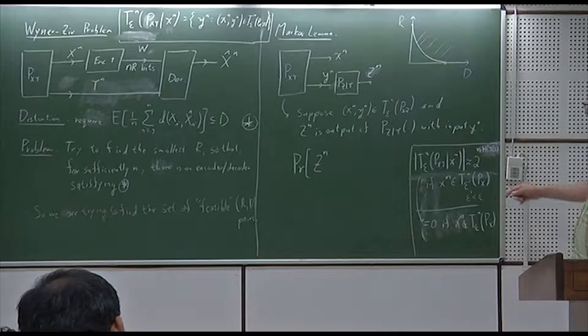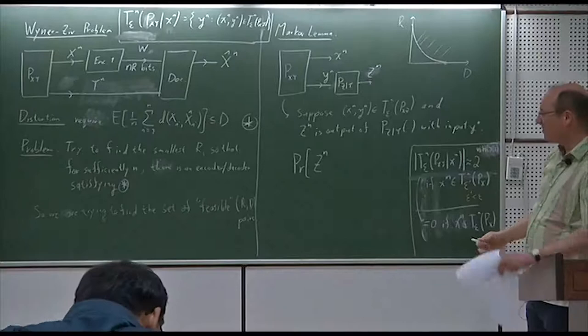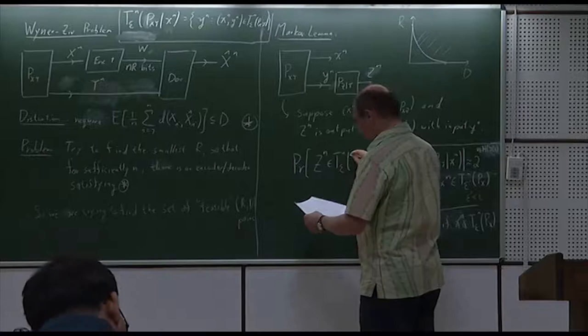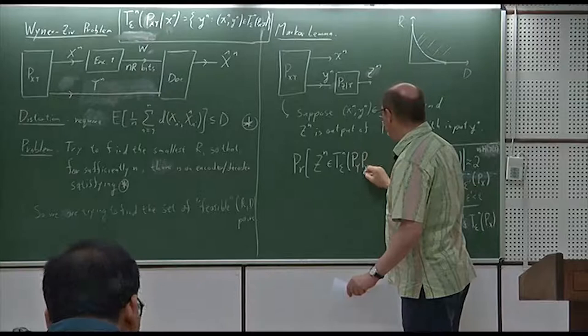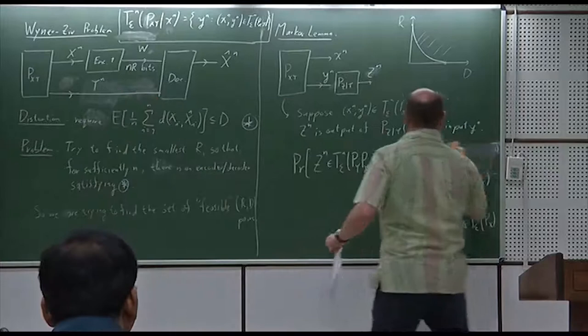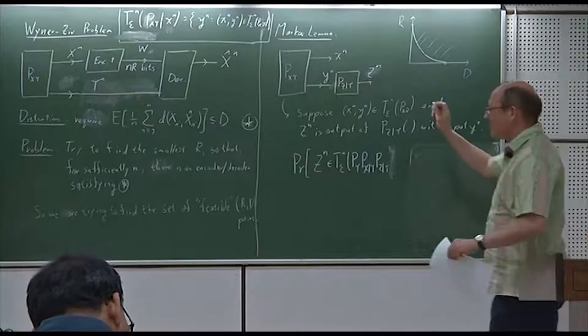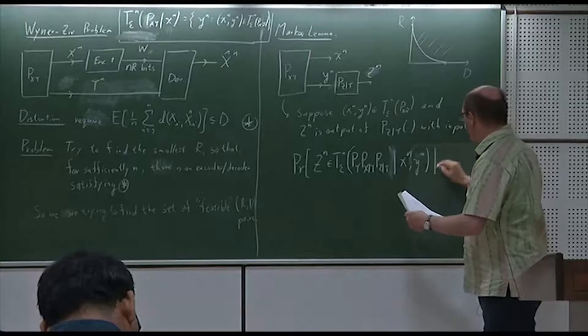The key point is that z_n — the probability that it is in the jointly typical set corresponding to this diagram, namely p_Y, p_{X|Y}, p_{Z|Y}, conditioned on x_n — let me write it out and then we'll discuss it. I don't think it's such a deep result, but I'll explain why in a moment. But we need it — that's important.